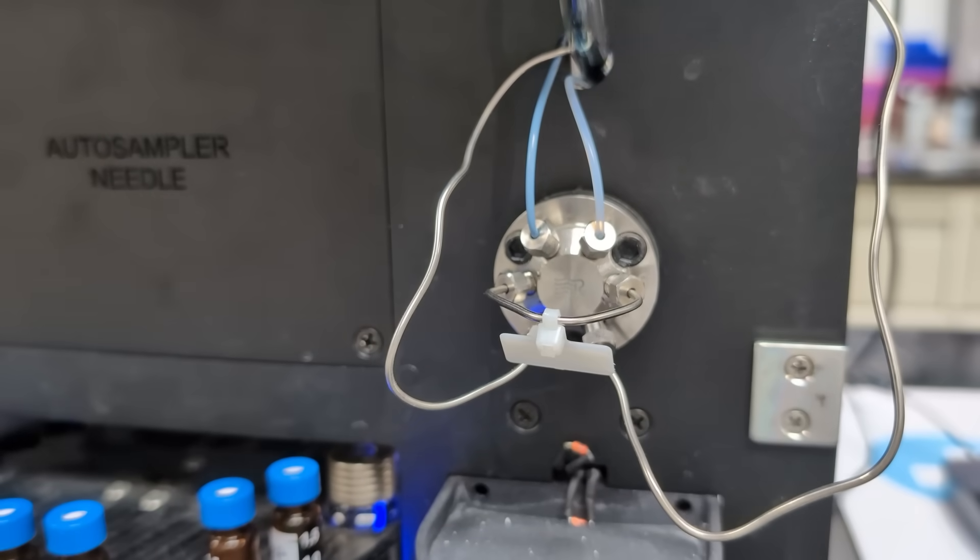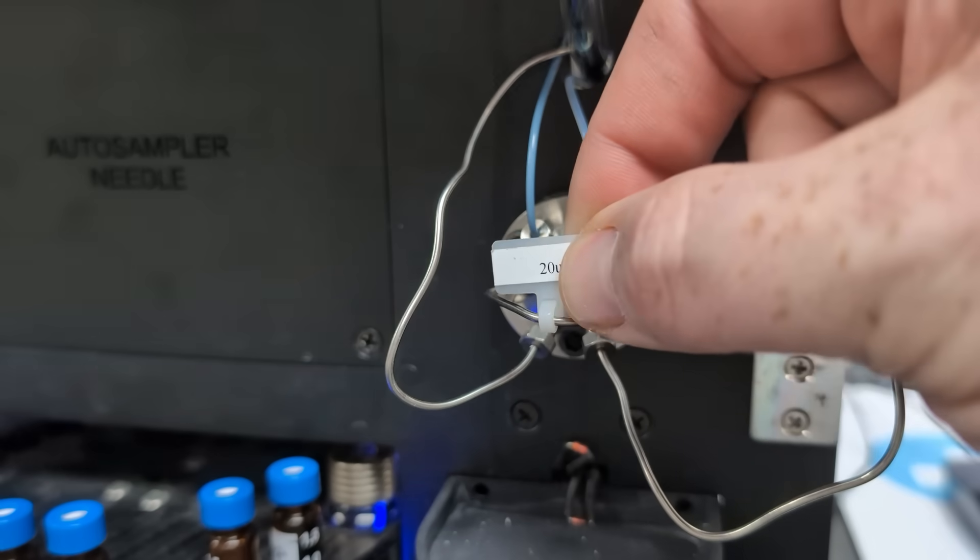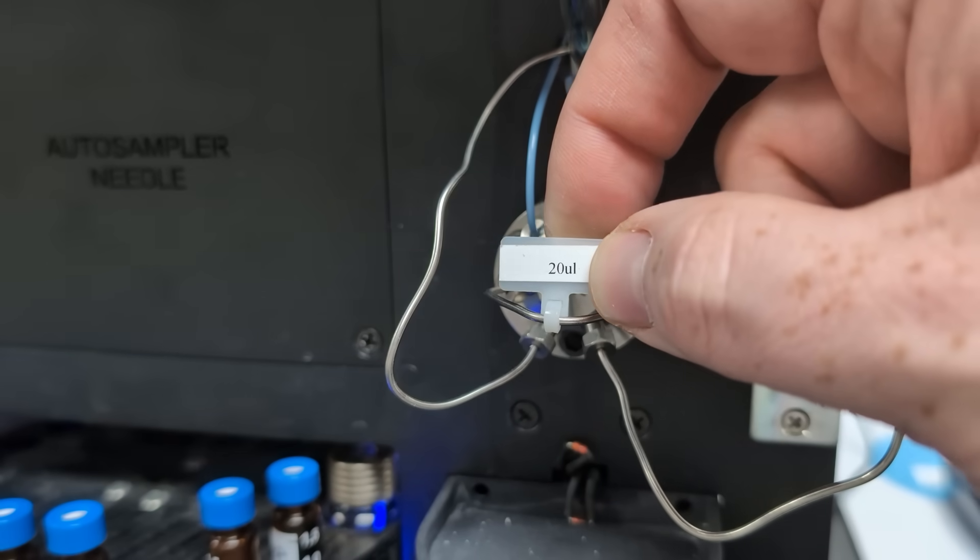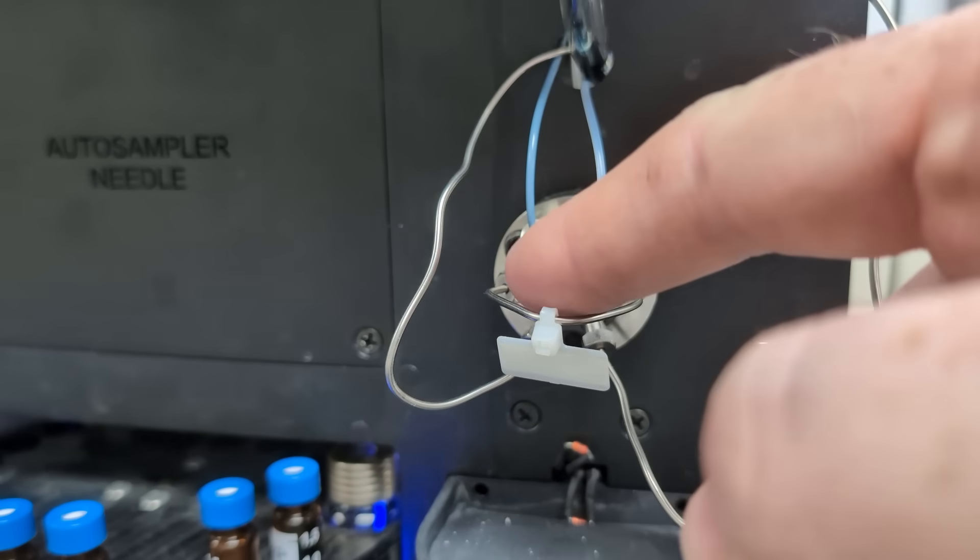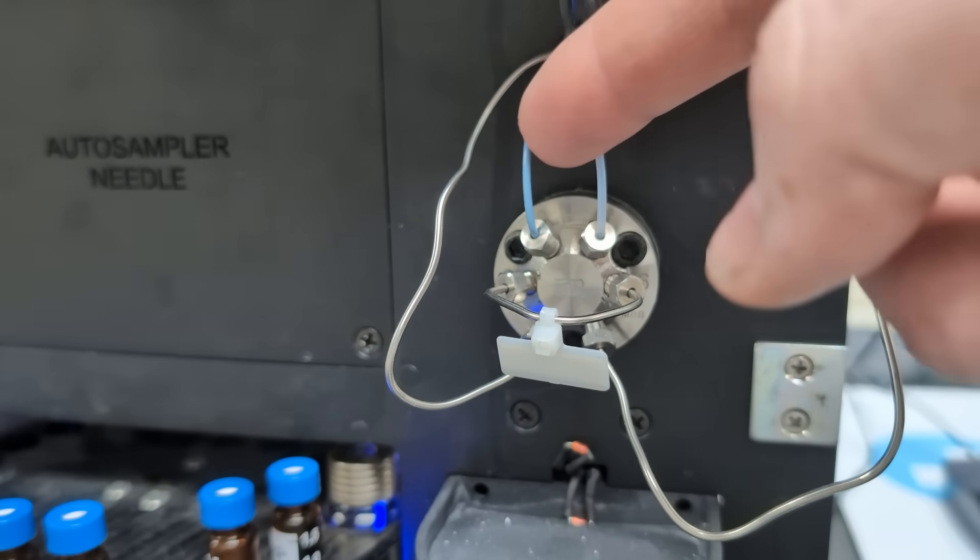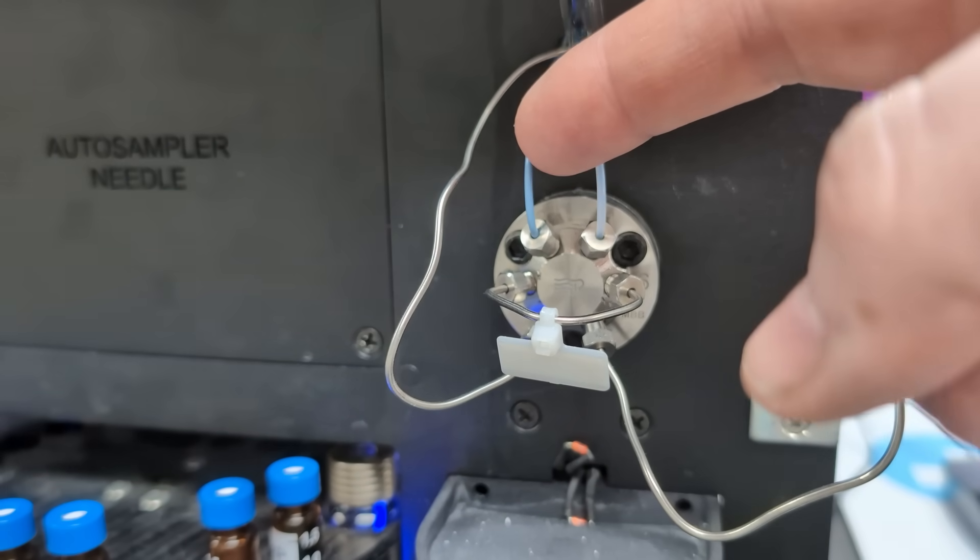Here we have an example of a pull-to-fill system on the Lucidity LC-UV. Here's our sample loop, and it's a 20 microliter loop, so that's usually denoted on the loop itself.